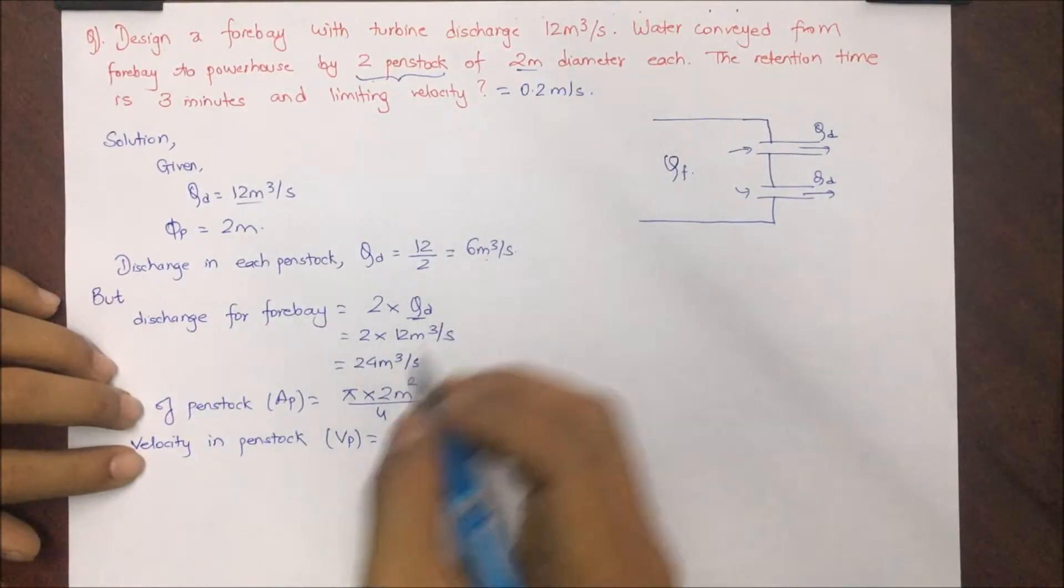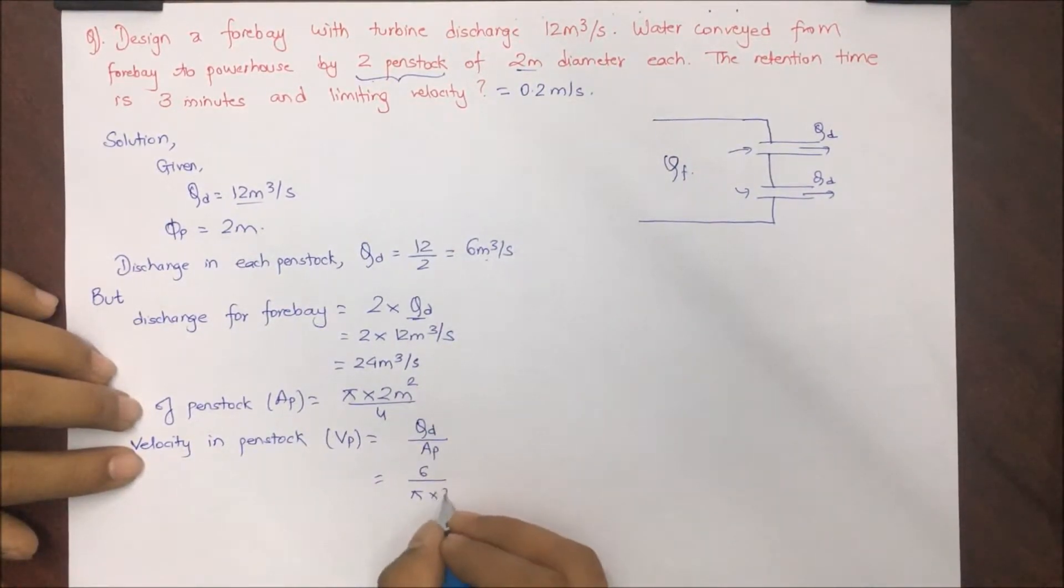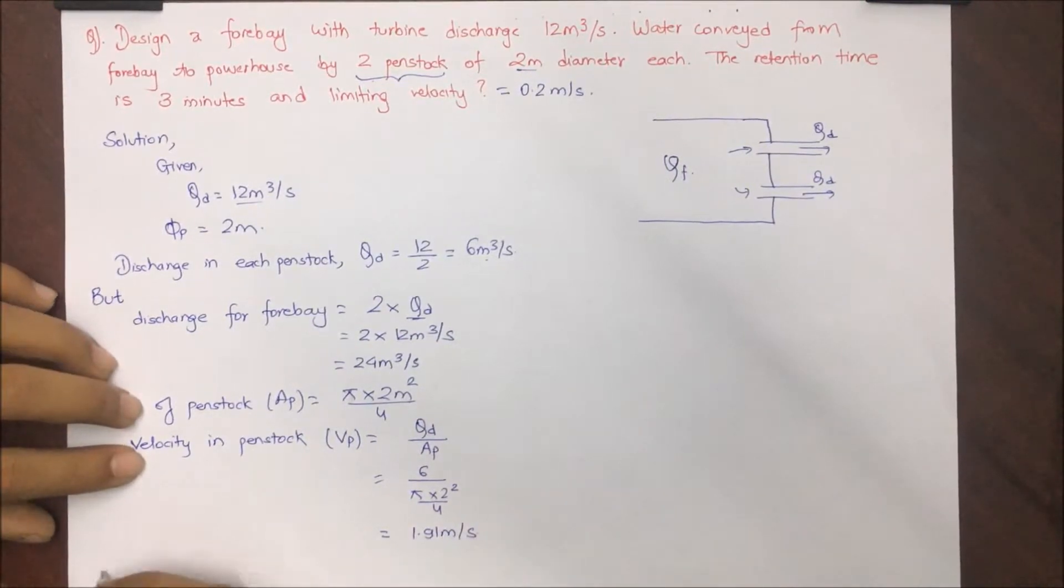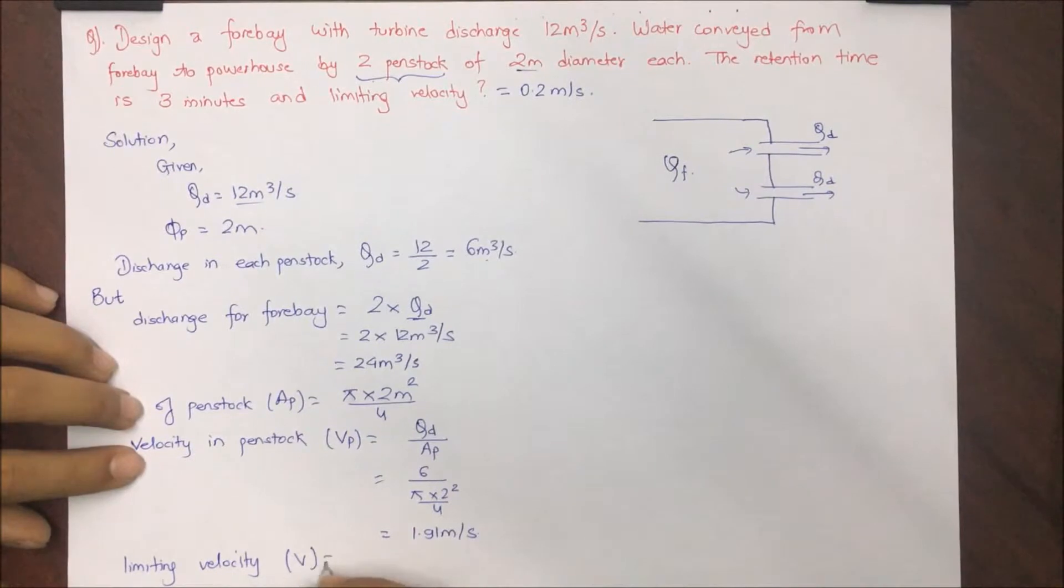Velocity in penstock will be discharge in penstock, so discharge in penstock divided by Ap. As we have two penstocks, the discharge is divided. So 6 by pi into 2 square by 4, that comes to 1.91 meter per second. Similarly limiting velocity has been provided, V equals 0.2 meter per second.